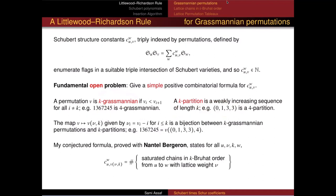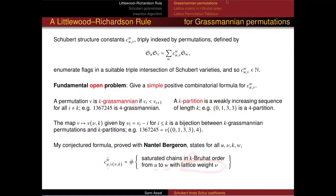The simplest way to state the rule was actually stated without details in this generality by Bergeron and Sutil in their 1998 paper. They expected the answer to look like saturated chains in Bruhat order from U to W with some condition depending on V. Now I know what that condition is — it's something I'll call lattice weight V — and you have to use K-Bruhat order. There are no restrictions on what U, V, W, or K can be.